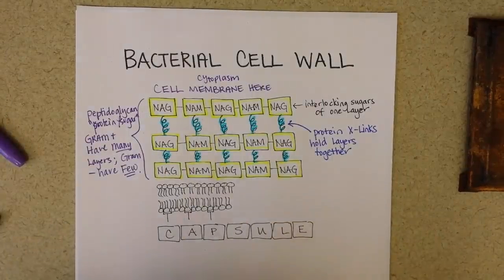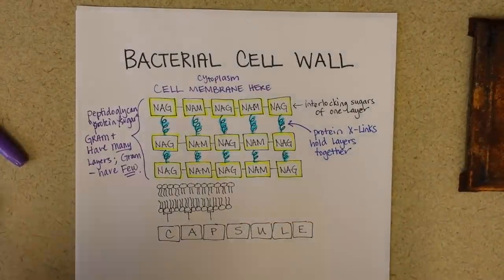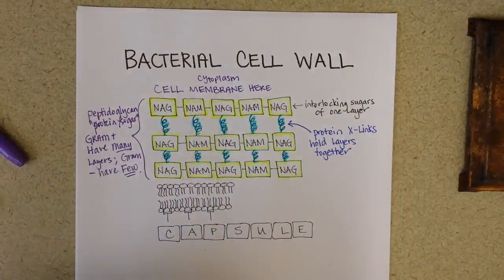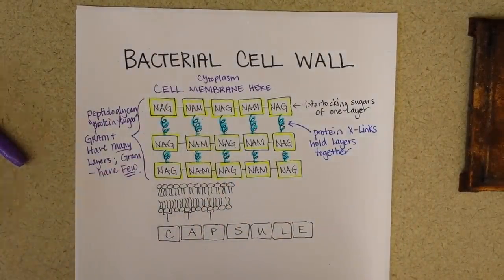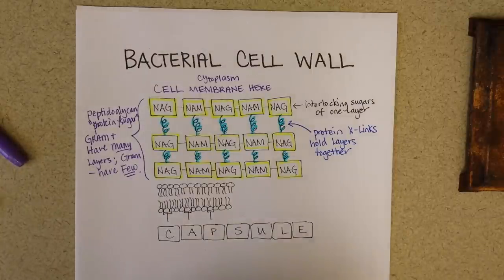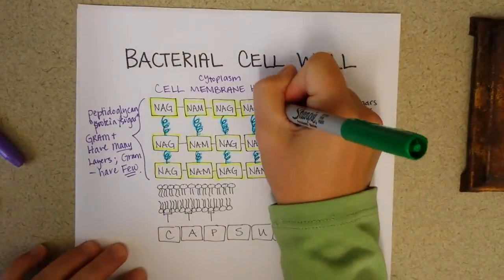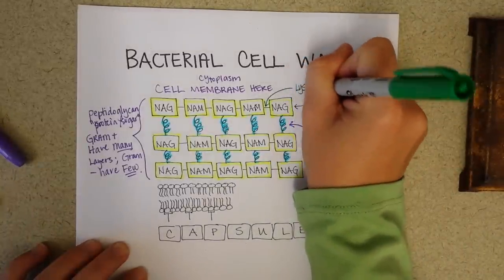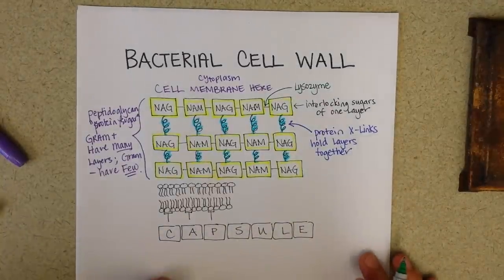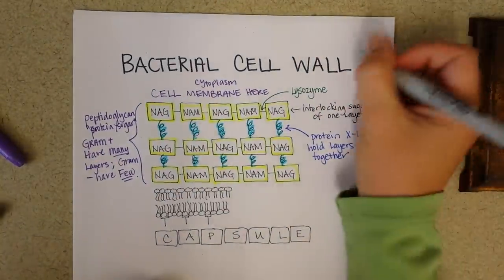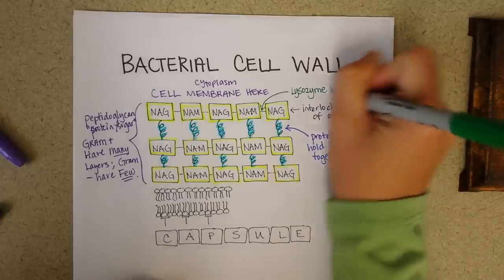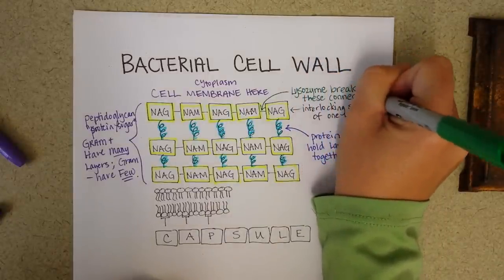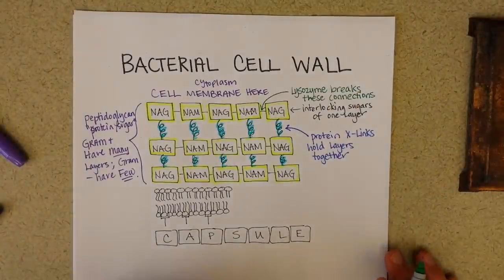And our body has a way of breaking these interlocking sugars in all of our bodily secretions with lysozyme. So I'm going to use green here. And we're going to point an arrow at the connection between a couple of sugars and lysozyme, which is present in our saliva as well as our sweat and our tears. And this is one of the ways that we can prevent bacterial infections.